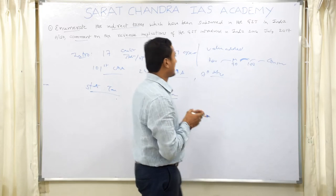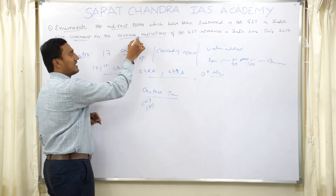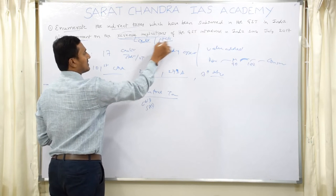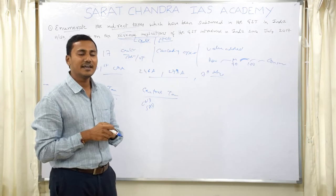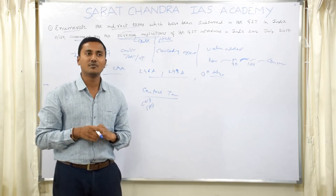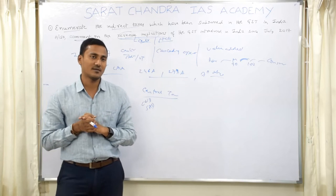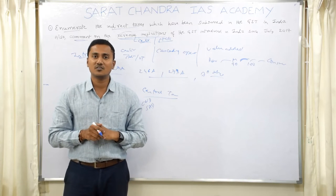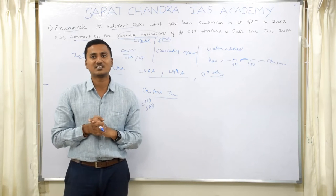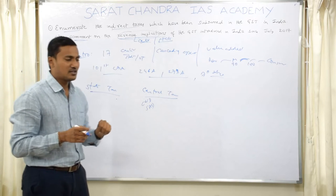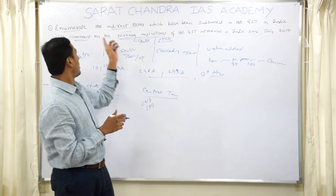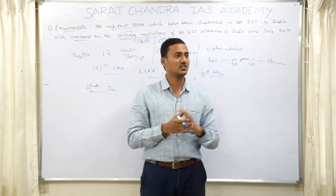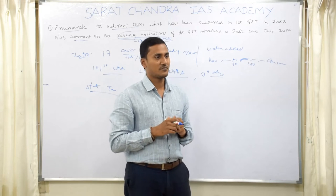Now move on to the second part — comment on the revenue implications. You must mention the implications for both the Centre and the states. Most state governments are complaining about negative revenue implications — they are getting less money than before July 2017. At the central level, discuss whether the tax base has increased, whether tax collection has increased, and also talk about future scope, as GST was introduced only about 2 years back and we may need to wait a few more years for it to stabilize.